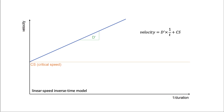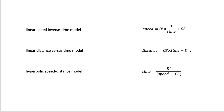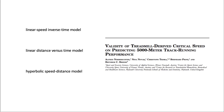In this model, critical speed is identified as the y-intercept, whilst D' is portrayed as the gradient. Next to the linear speed inverse time model, the linear distance versus time model and the hyperbolic speed distance model are also used to calculate critical speed. A study by Nemerechter et al. used these three models to determine 5000 meter times and found a prediction error across the models of around 65 seconds, which can be considered as moderate.